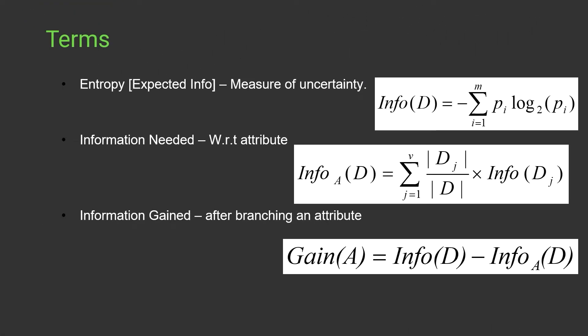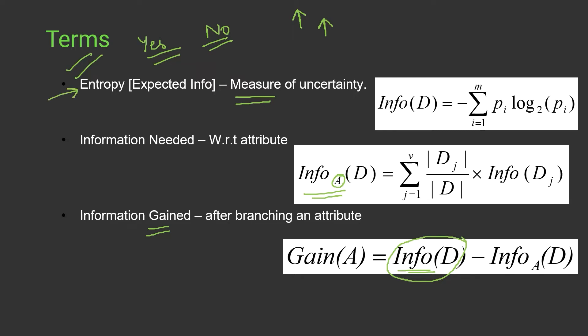First, let's understand the three important terms associated with decision tree. First is entropy — entropy is dependent on the label, that is the yes label or no label, and it is the measure of uncertainty. Higher the entropy, higher the uncertainty. The formula involves probability log probability. Then we have information needed, which is with respect to the parameter or attribute. Finally, we calculate information gain — that is, on splitting our decision tree on a particular parameter, what is the gain. Gain equals the entropy of the label minus the entropy with respect to the attribute.